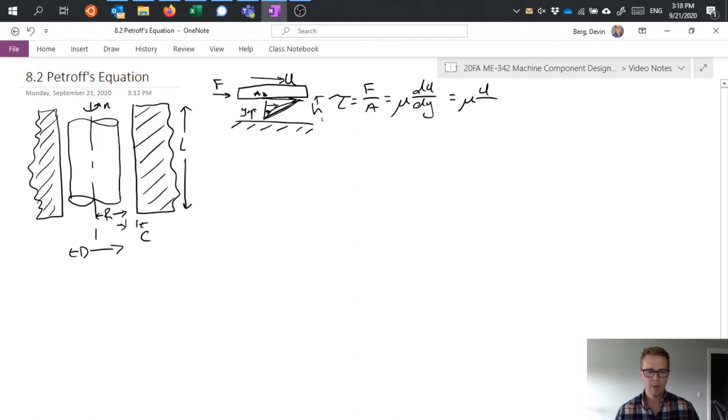So this would equal u over h where h is the height of this and we get something like that. So we can apply the same general principle to the problem of a shaft rotating over here.